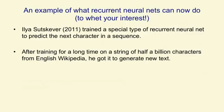To show you what recurrent neural nets can now do, I'm going to show you a net designed by Ilya Sutskever. It's a special kind of recurrent neural net, slightly different from the kind in the diagram on the previous slide, and it's used to predict the next character in a sequence. Ilya trained it on lots and lots of strings from English Wikipedia, seeing English characters and trying to predict the next English character.